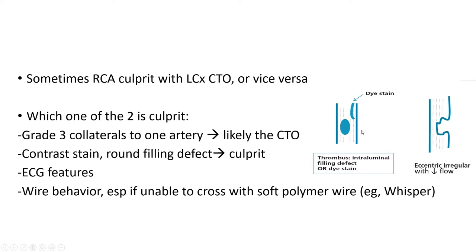The last feature: if you cannot figure it out and you suspect RCA is the culprit, you try to wire it. If you're unable to cross it with a simple polymer wire — such as a workhorse wire or BMW wire, or a soft polymer wire like Whisper — and you still cannot cross within a couple of minutes, then you start suspecting this may be the CTO and the other vessel is potentially the culprit. Those are the four features I use when I have occlusion of both arteries.